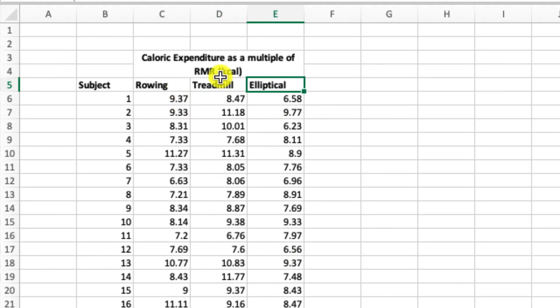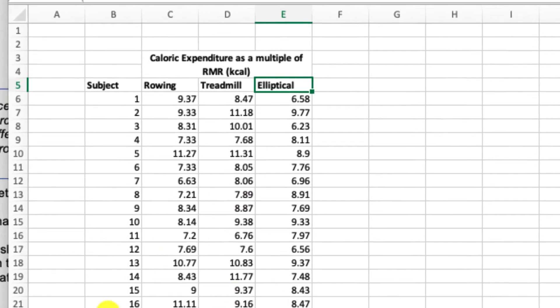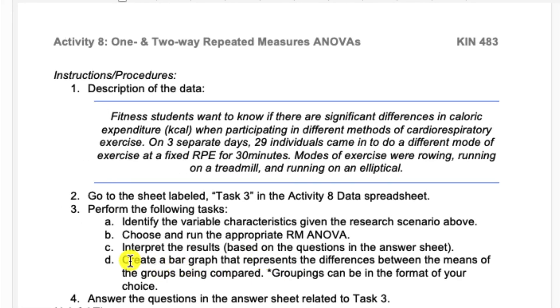So again, rowing, running on the treadmill, and then running on the elliptical. Similar to task 2, you'll pick which repeated measures ANOVA is appropriate to run on these data, and then you'll interpret your results, answer the questions in the answer sheet, and then again create a bar graph that represents the differences between the means of the groups being compared.